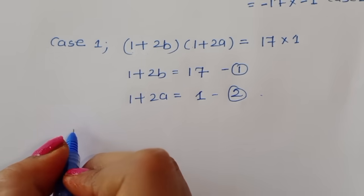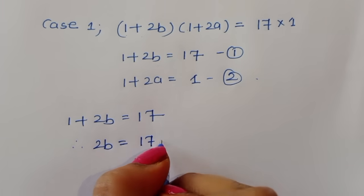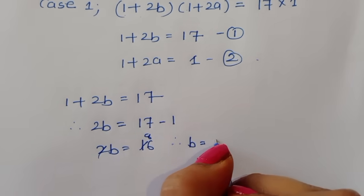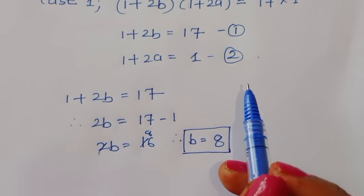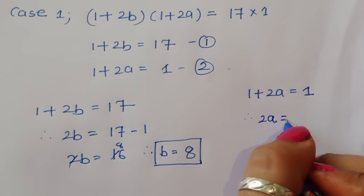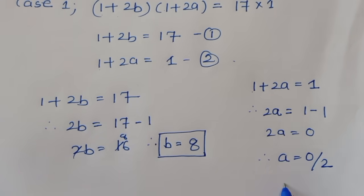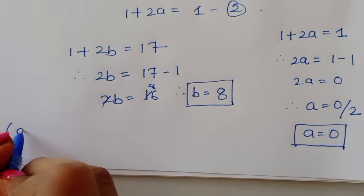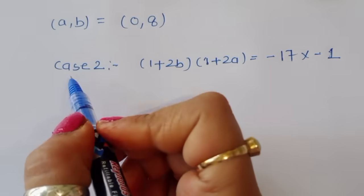From equation 1: 1 + 2b = 17, so 2b = 16, therefore b = 8. From equation 2: 1 + 2a = 1, so 2a = 0, therefore a = 0. From Case 1, we get a = 0 and b = 8.